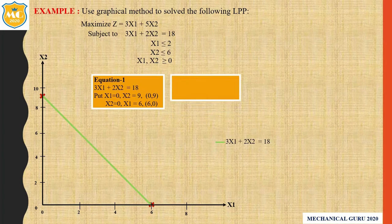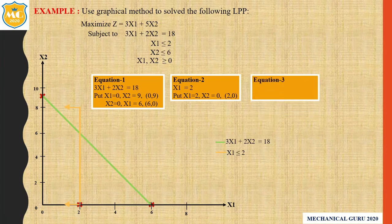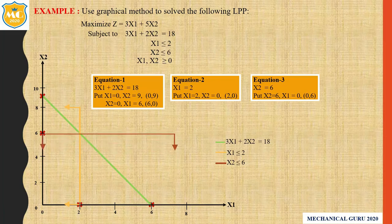Now consider the second constraint: x1 ≤ 2. Here x2 = 0, so the coordinate is (2, 0). We plot this point. Since the sign is less than or equal to, this represents the region towards the origin. Now consider the third constraint: x2 ≤ 6. Here x1 = 0, so the coordinate is (0, 6). We plot this point, and again the sign is less than or equal to, so it represents towards the origin.